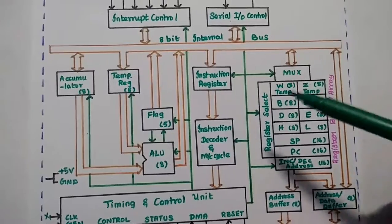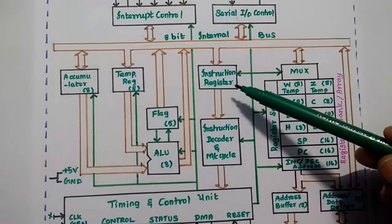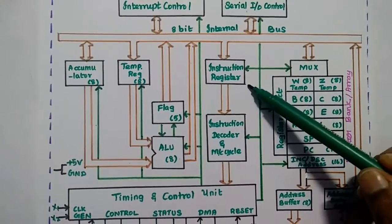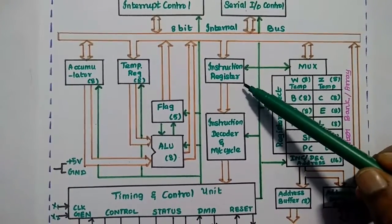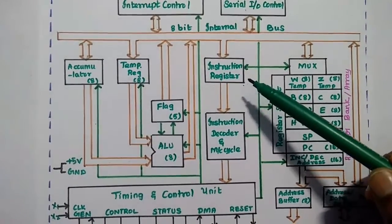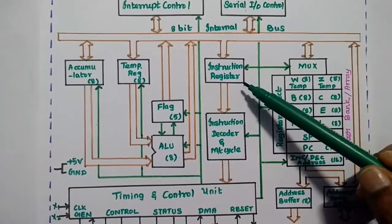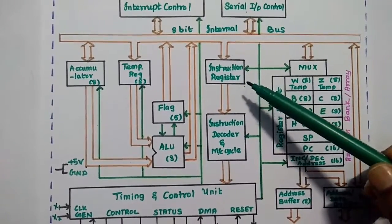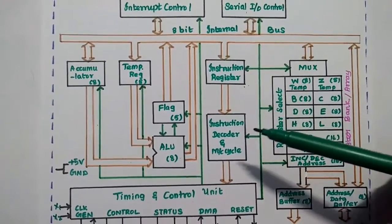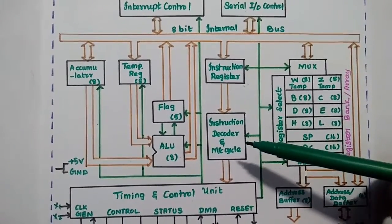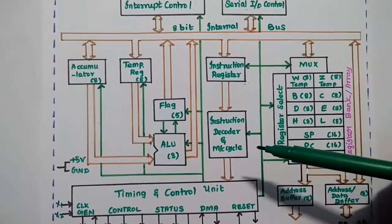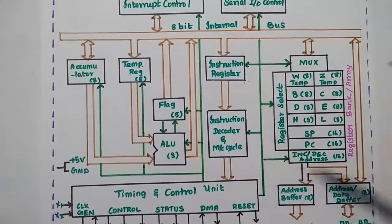The instruction register is an 8-bit register used to store the instruction code, which is then decoded by the instruction decoder.